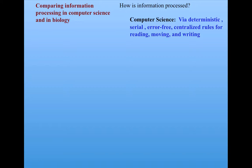How is information processed? In computer science, we know that information is typically processed via deterministic programs that are serial, that is, one step at a time, error-free—programmers make a lot of effort to debug their programs—and centralized rules, that is, in a central processing unit, for reading, moving, and writing information.